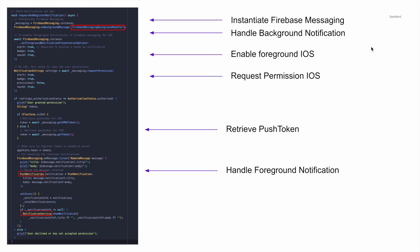To enable foreground notifications on iOS, there's an additional step where we call `await FirebaseMessaging.instance.setForegroundNotificationPresentationOptions` with alert set to true. The next additional step is to request permission for iOS notifications. If permission is granted successfully, we retrieve the push token based on the platform. If it's iOS, we call `FirebaseMessaging.instance.getAPNSToken()`. If it's FCM, we call `getToken()`. We'll use this token when signing in, as we need to upload this token to the Sendbird server in order to use push notifications.